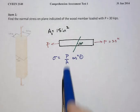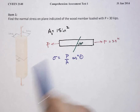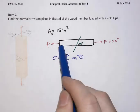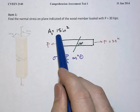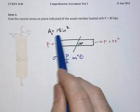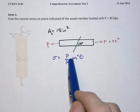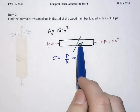I have redrawn the problem statement here because it printed out somewhat lightly. Here's our axial load of 30 kips. We have a cross-sectional area that is three by five for a total of 15 square inches and the inclined plane with respect to the horizontal is 60 degrees.